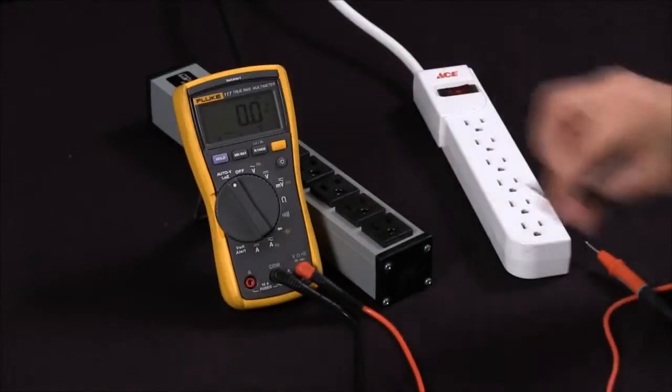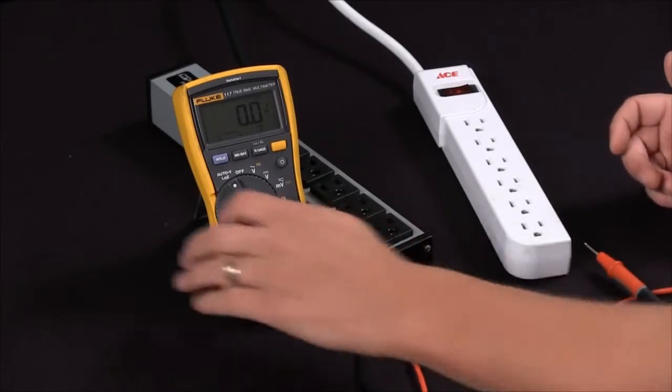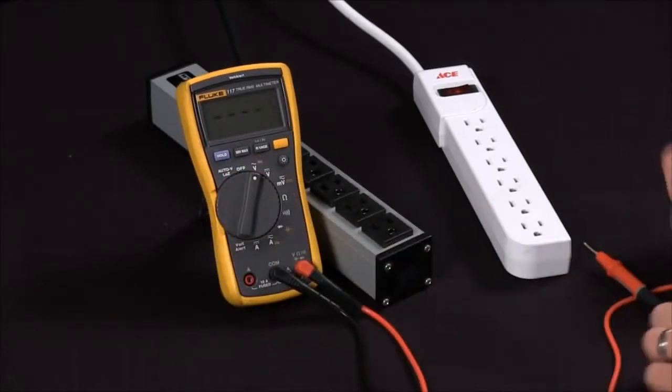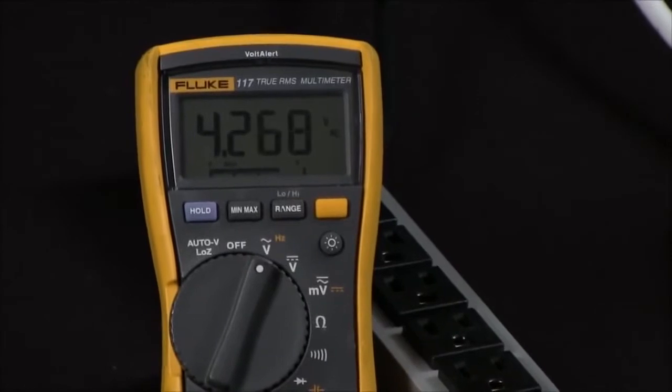In our second instance we're going to take a measurement with something that has an improper ground. We'll go back to our voltage setting, ground to hot, and you can see that I'm getting a low voltage reading.